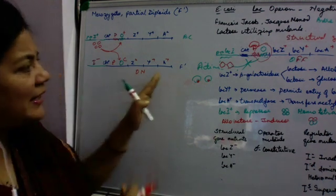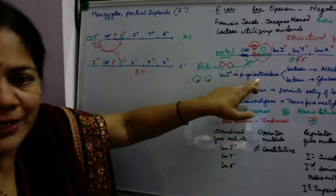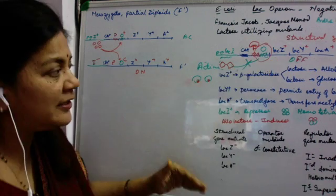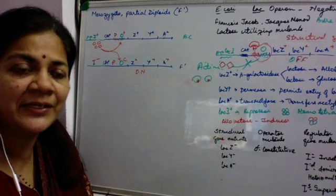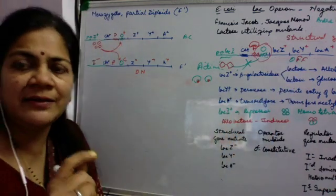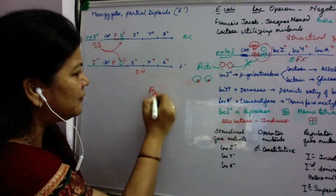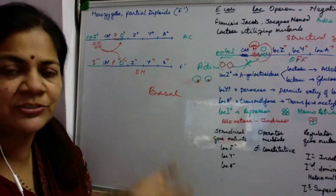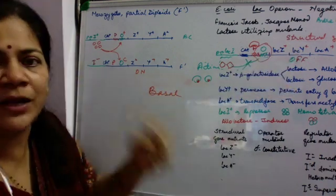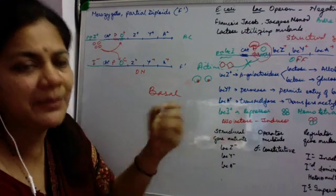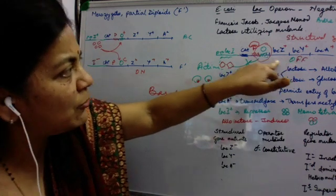The question is: allolactose is made by beta-galactosidase, which is made by LacZ — but this is only produced when the operon is on. Yet we need allolactose to turn the operon on. The reason is that in the Lac Operon there is a basal level of transcription going on, which produces small amounts of all three proteins even without lactose. So as soon as lactose is present, some permease allows its entry into the cell, beta-galactosidase converts lactose into allolactose, and allolactose then induces the Lac Operon to turn on.